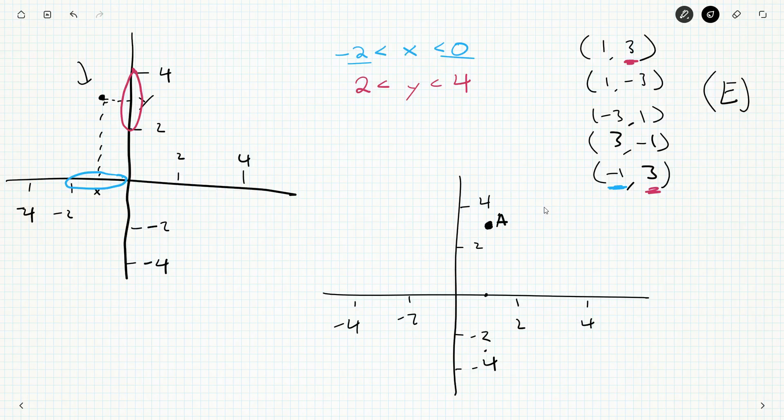(1,-3), that's in the opposite direction, down here. We go over by one and down to B. (-3,1), negative three is here, we go up by one and that's where C is. (3,-1) would be down here, that's D. And (-1,3) would be E. And this is the only one that looks like where P is.